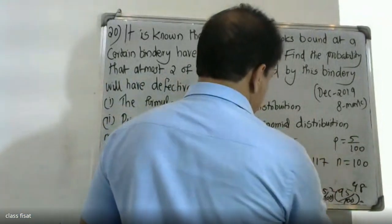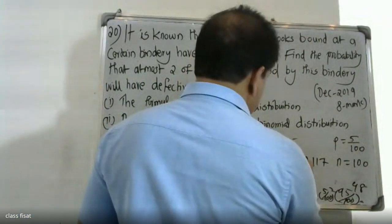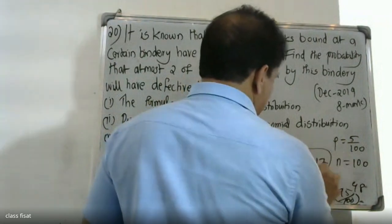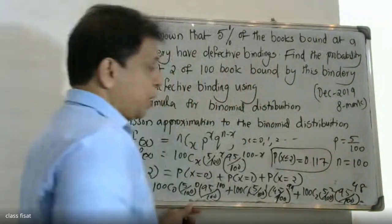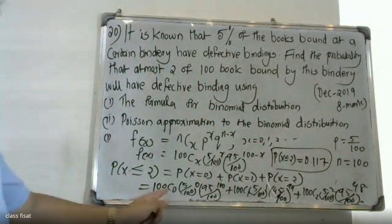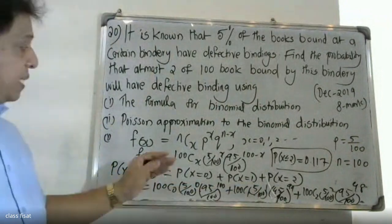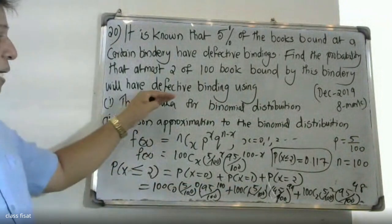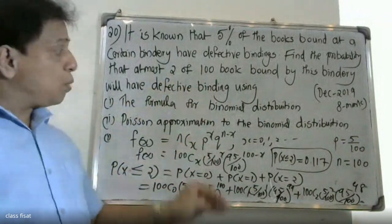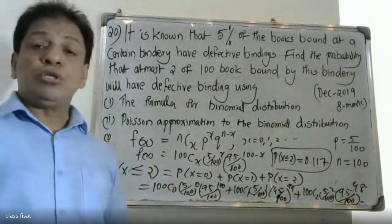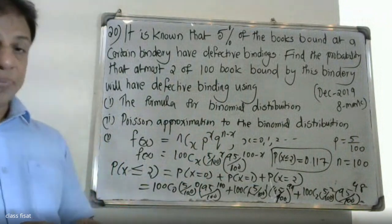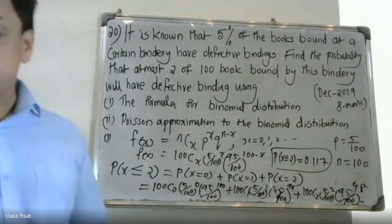The probability of x less than or equal to 2, using the binomial distribution, equals 0.117. Now we will solve the same problem using the Poisson approximation to the binomial distribution.